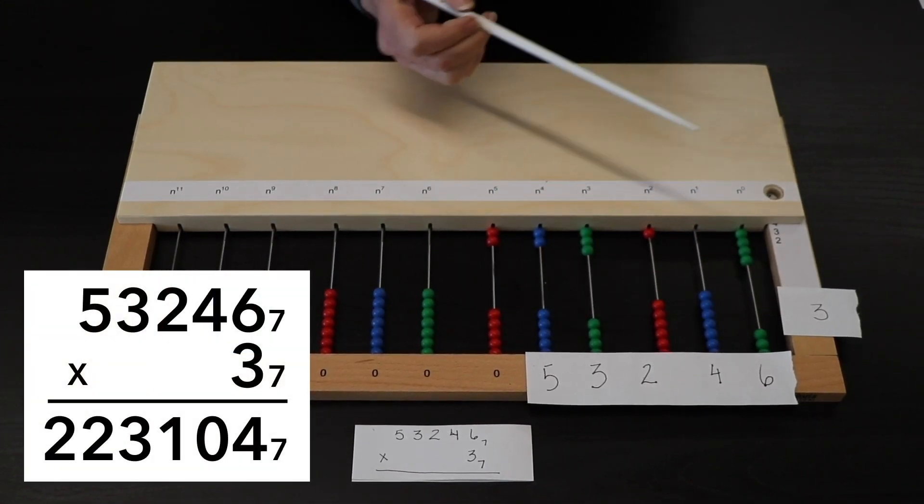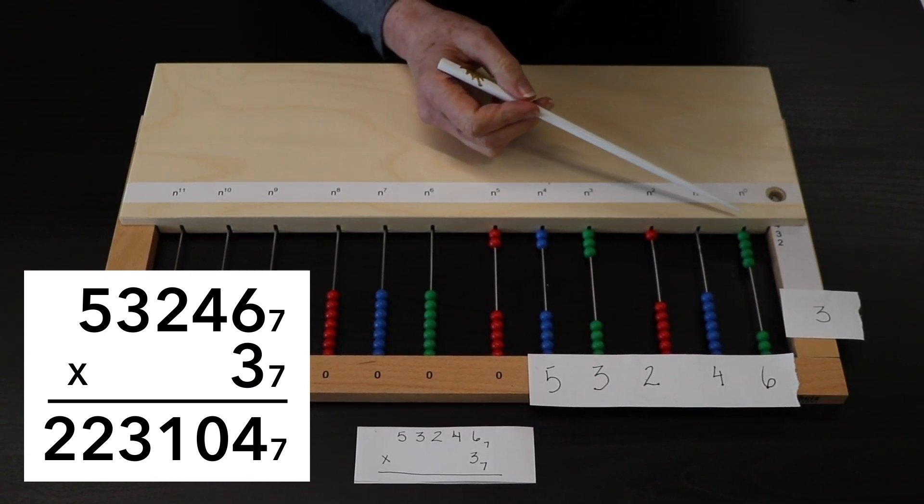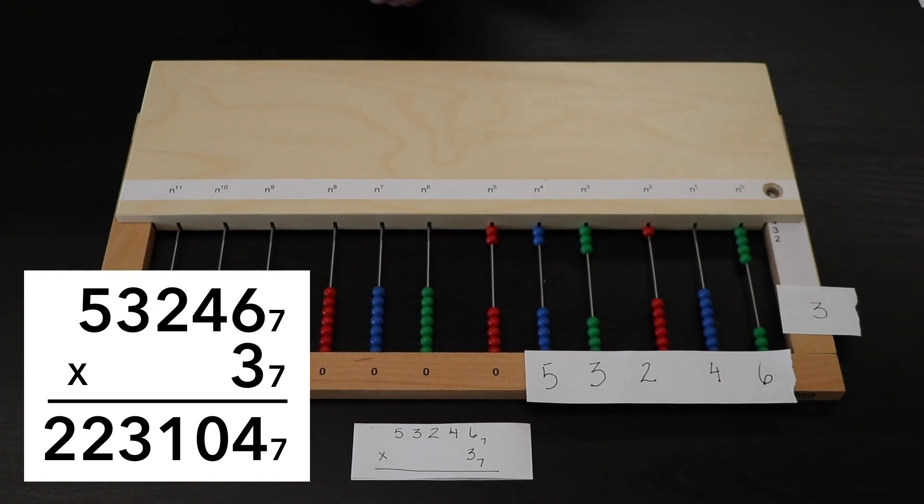So the product is 2, 2, 3, 1, 0, 4 base 7.